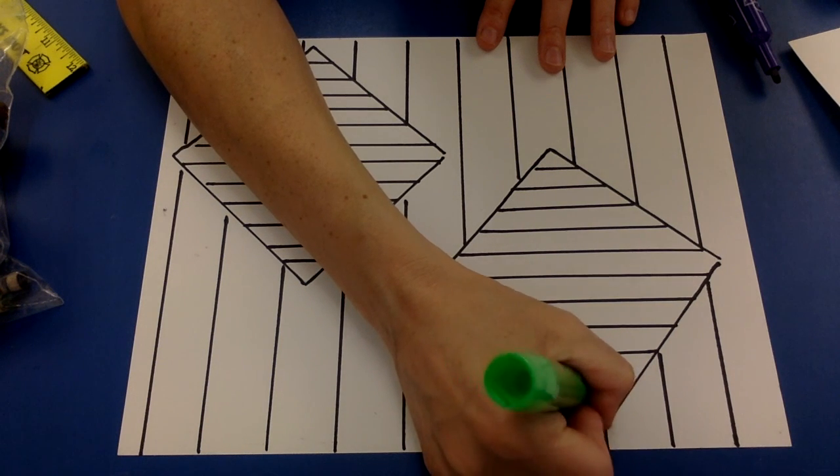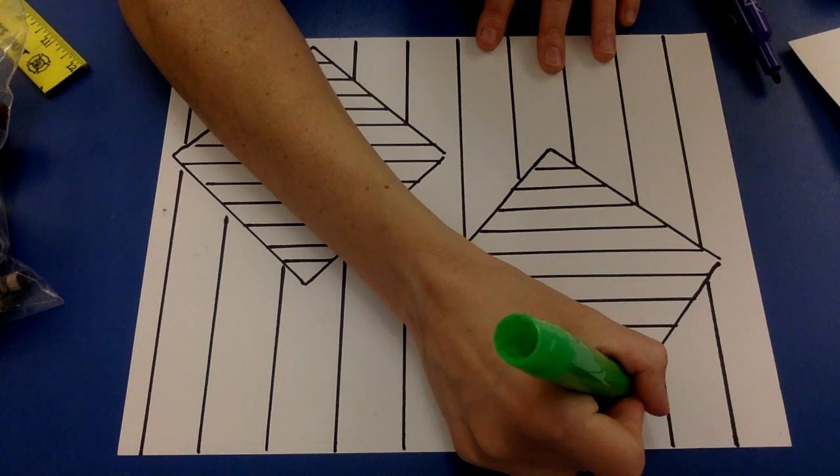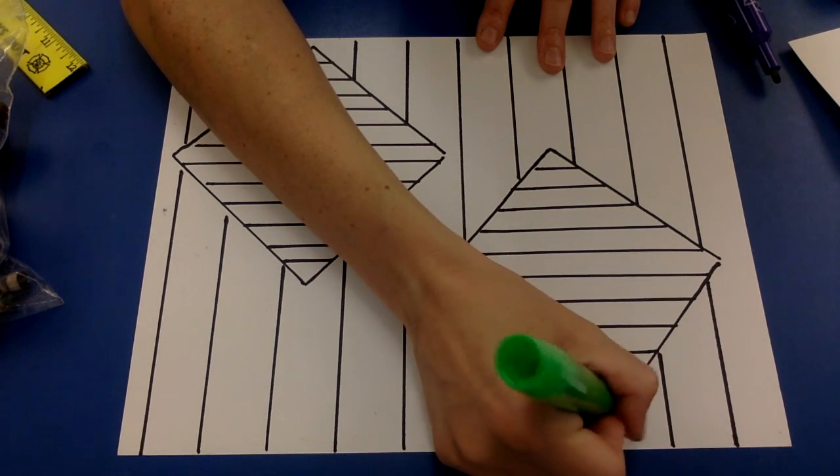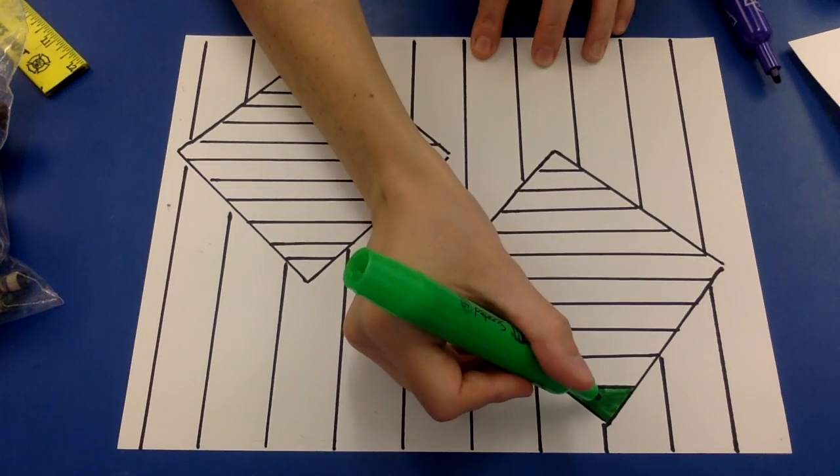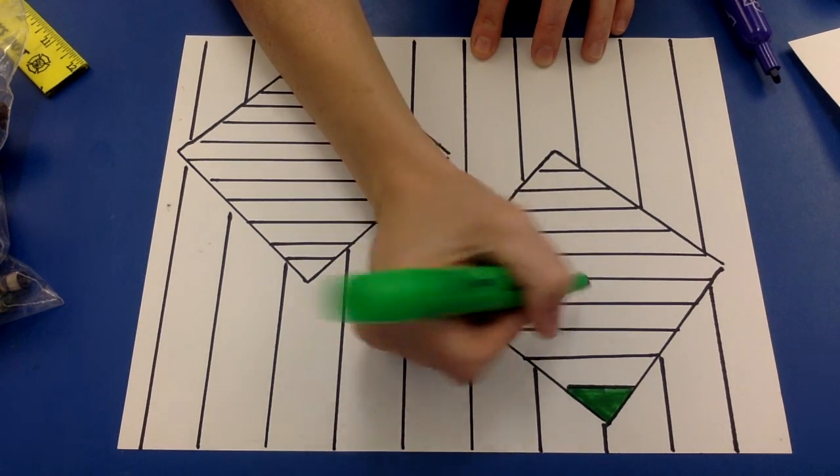So the best way to do this so that your artwork stays nice and neat is trace first, then color in. I'm doing an AB pattern. So I'm going to do for my colors, green, purple, green, purple, green, purple.